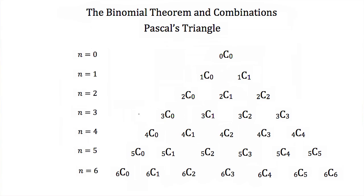Now that we understand combinations, let's talk about the binomial theorem. Before we can understand it, we have to understand Pascal's triangle. Pascal's triangle is the triangle we get when we write down all the different possible combinations of choosing different r values out of n possible values — 0 out of 0, then for n equals 1, and n equals 2, 3, and so on as n increases.